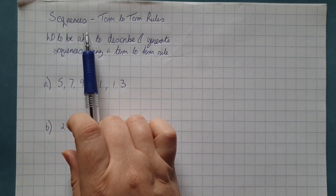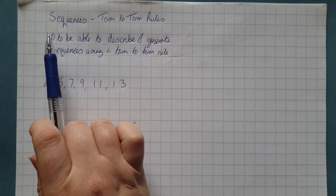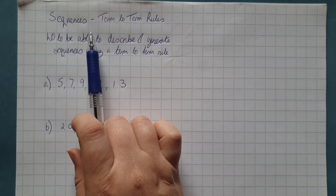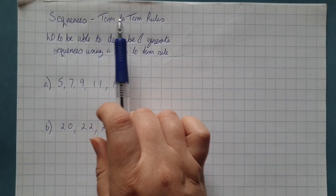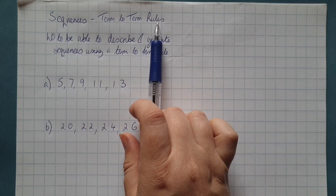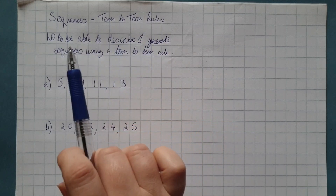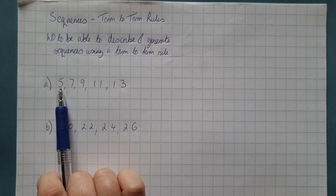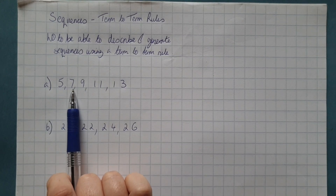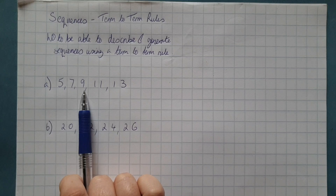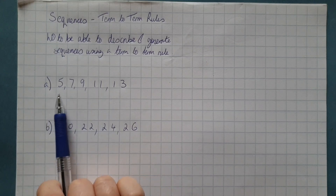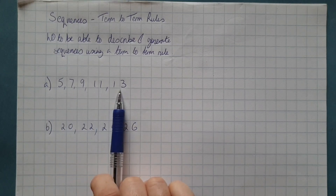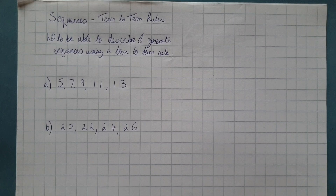A sequence is a pattern that can be described mathematically. Term-to-term rules mean we are looking for the rule that describes the steps going from one part of the pattern to the next. Each part of a pattern or a sequence in mathematics is referred to as a term.